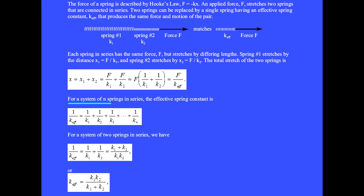For a system of n springs in series, the effective spring constant is 1 over k effective equals 1 over k1 plus 1 over k2 plus 1 over k3, and so on.